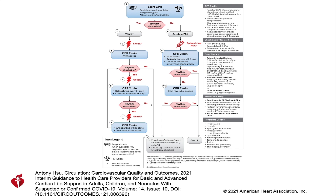Frontline healthcare providers are at significant risk for contracting respiratory illnesses due to frequent contact with symptomatic patients. Adequate PPE including N95 mask or positive air pressure respirators, especially during aerosol generating procedures or AGPs, can reduce the risk of coronavirus transmission. Provider risk may vary based on age, ethnicity, comorbidities, vaccination status, and system factors.